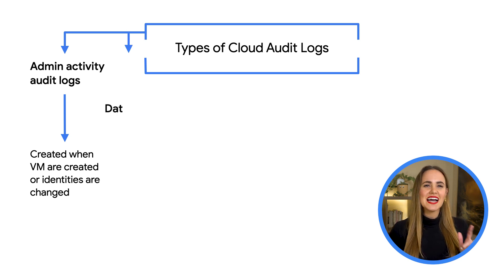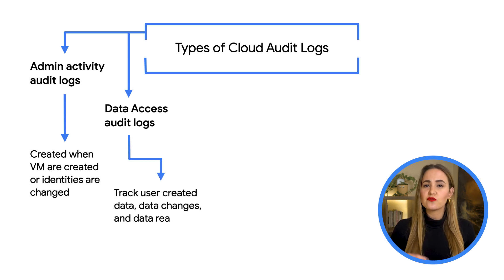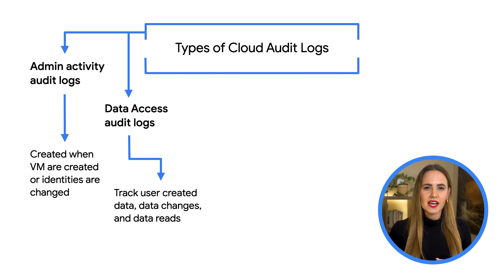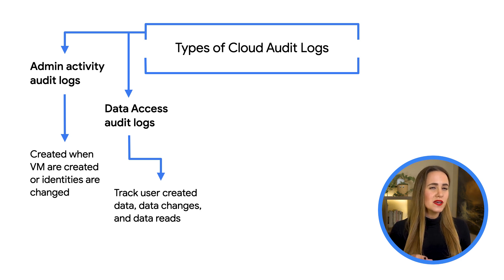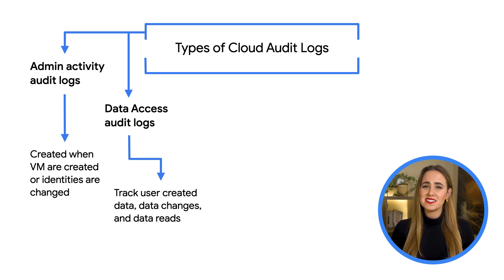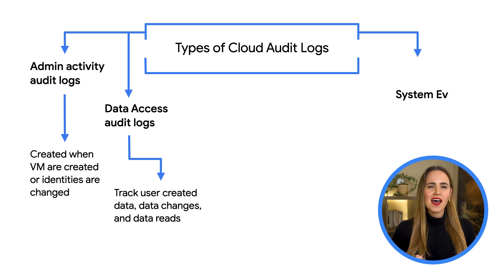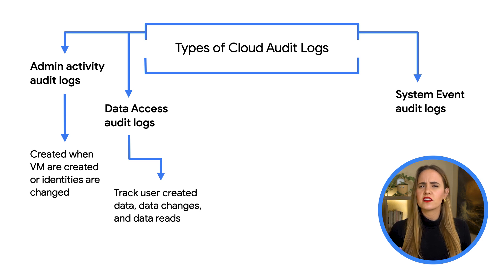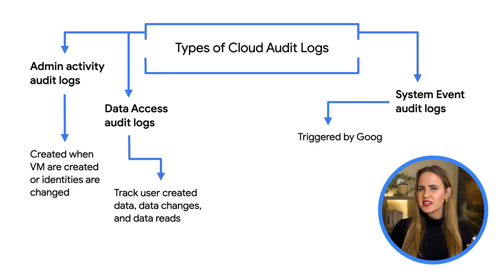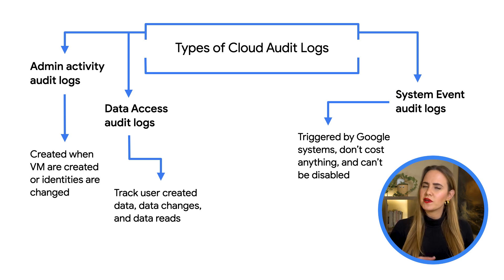Then there's data access audit logs, which keep track of users as they create, change, and read data that's been user provided. These do have costs associated with them, except for BigQuery's data access audit logs. Data access audit logs aren't on by default because they can store a lot of data. And then there's system event audit logs to track changes to how resources are configured. These logs are triggered by Google systems, don't cost anything, and can't be disabled.